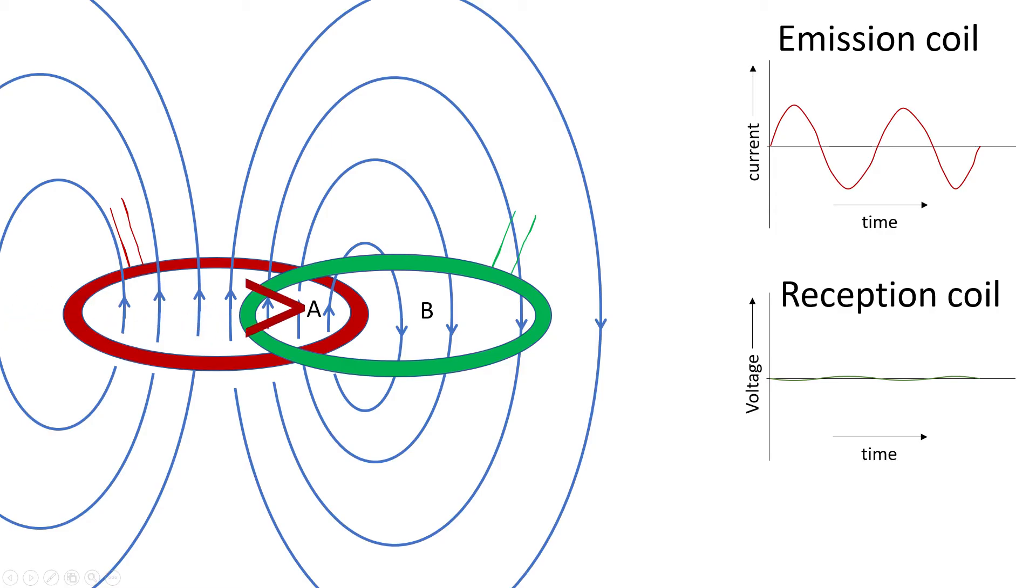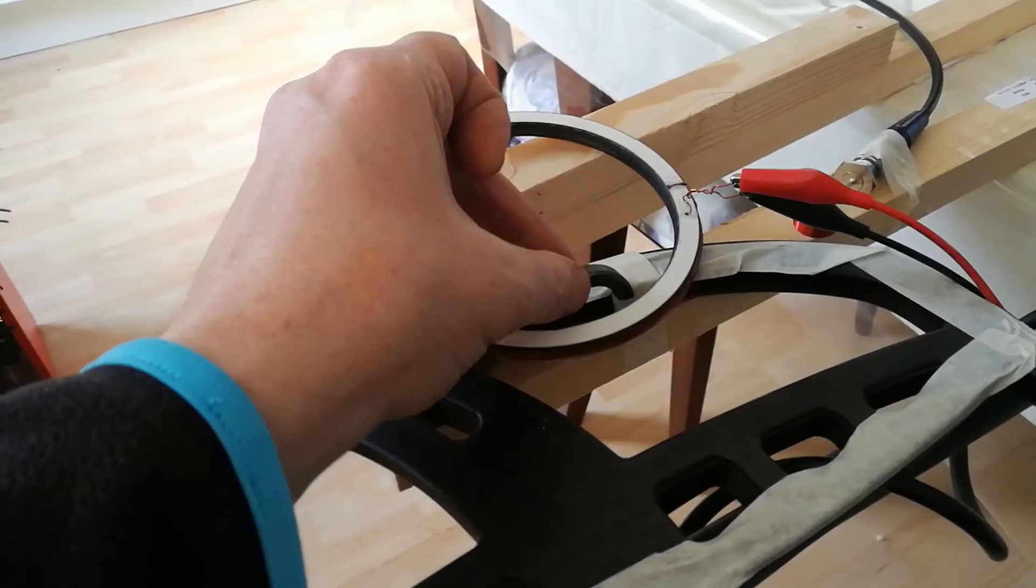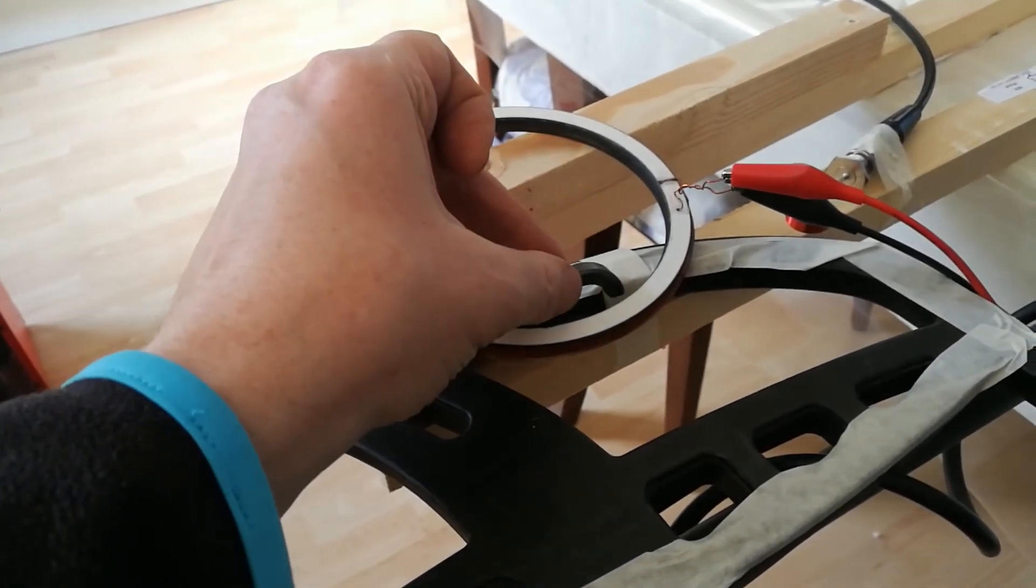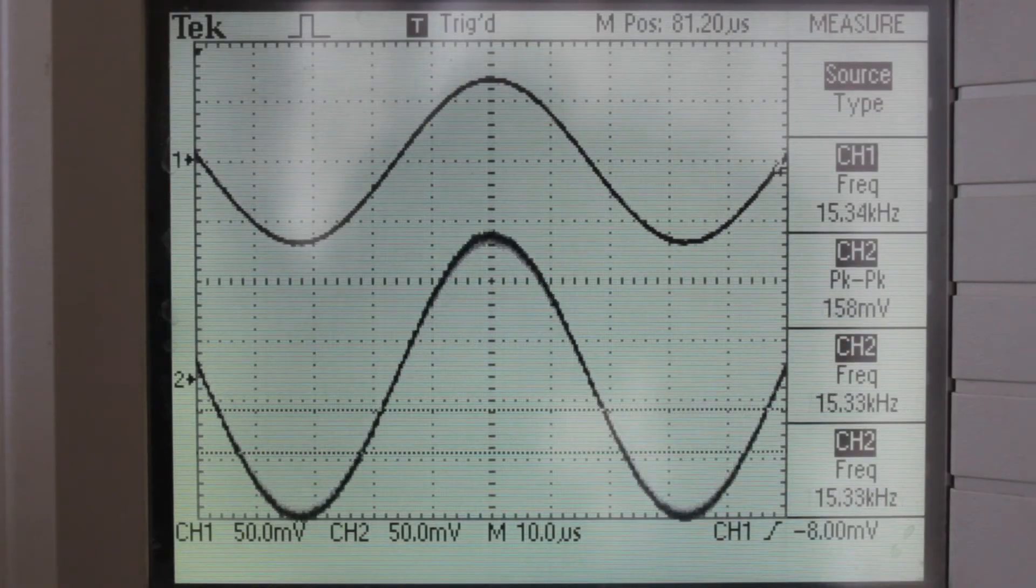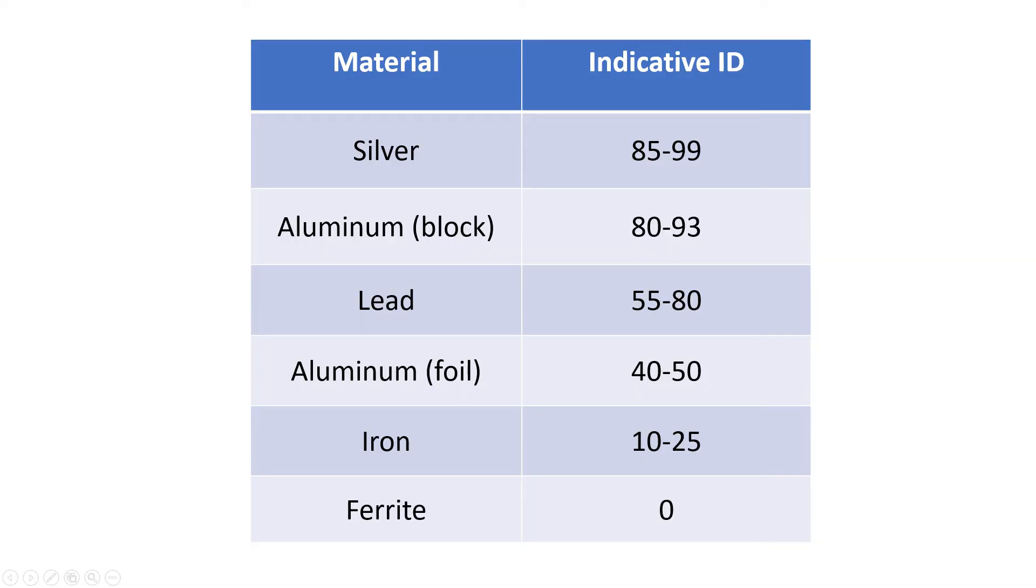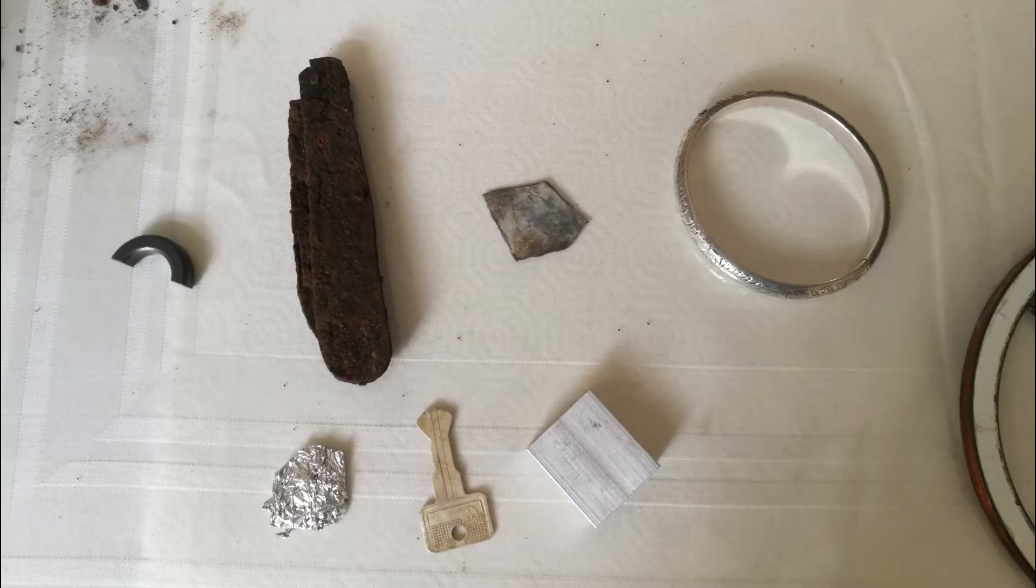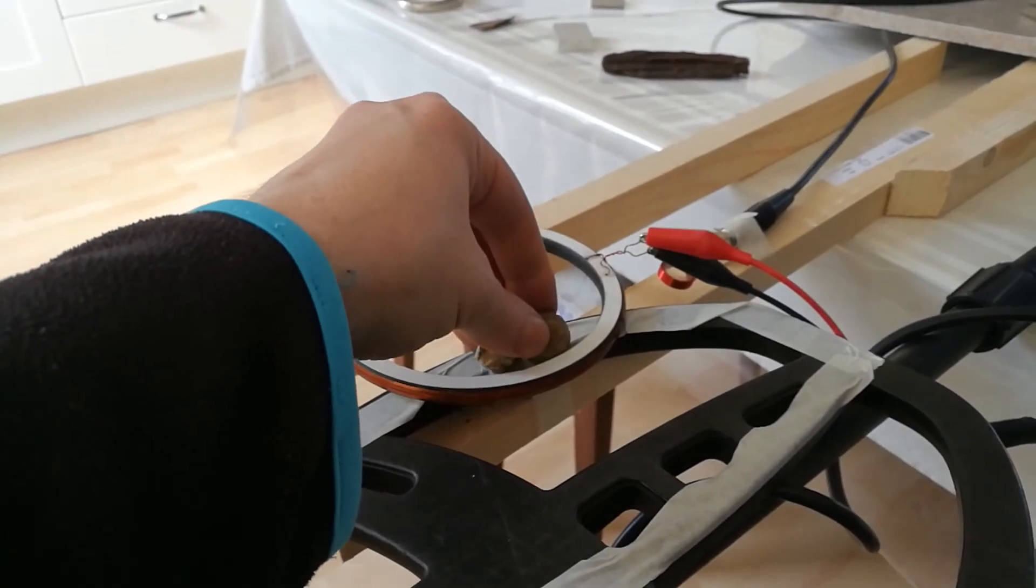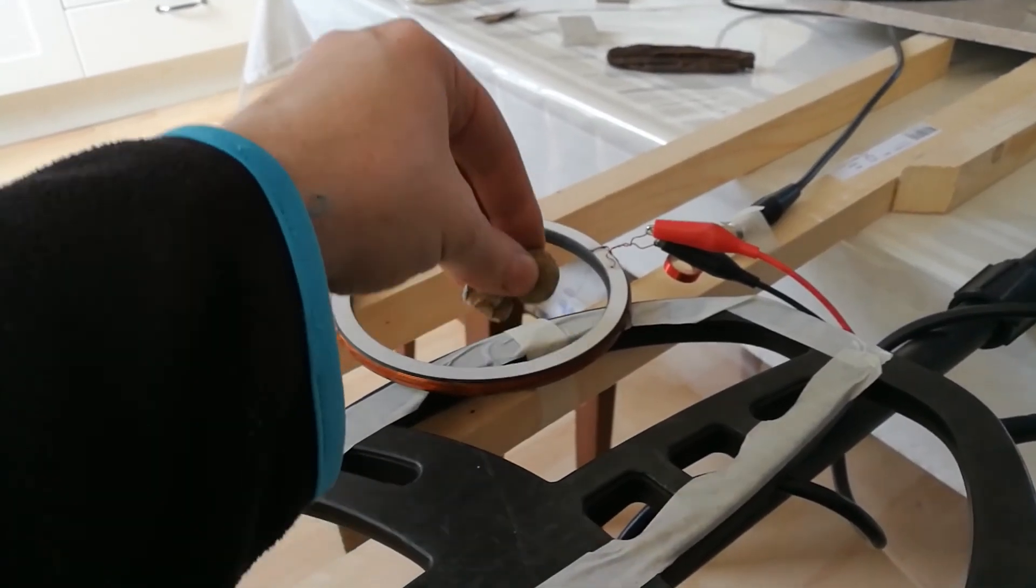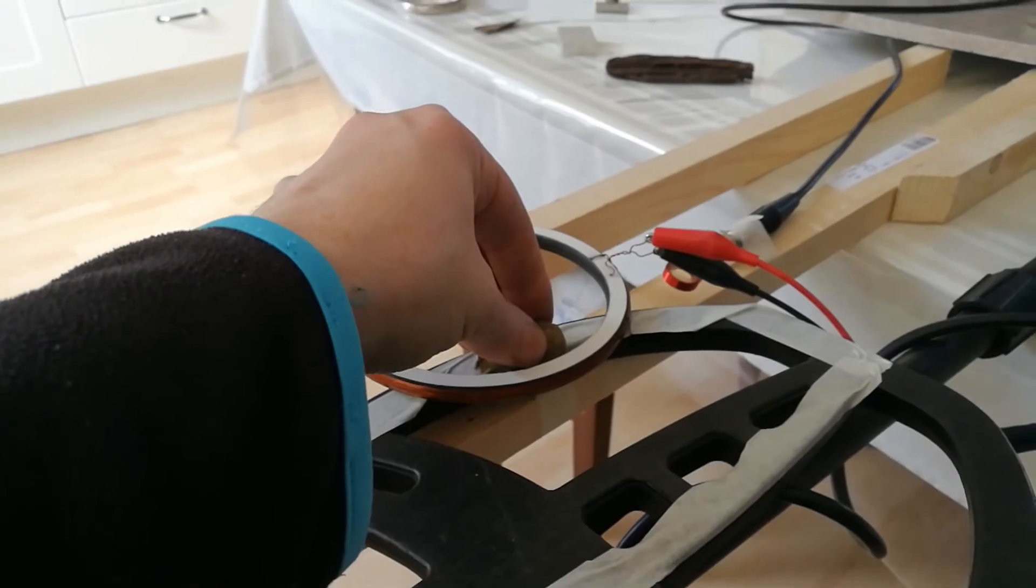I decided on area A as the location to measure the samples, because here I get the highest signals. Then I took samples of materials from the table and looked at the signal observed by the reception coil when placing the material in the overlapping area of the coils. This is what I see.